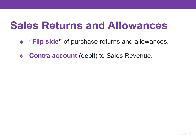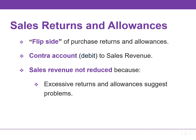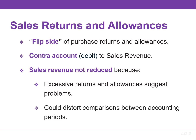The normal balance of this account is a debit. Companies use a contra account instead of debiting sales revenue to track the amount of sales returns and allowances. This information is important to management. Excessive returns and allowances suggest problems such as inferior merchandise, inefficiencies in filling orders, or mistakes in delivering or shipment of goods. It could also distort comparisons between total sales in different accounting periods.